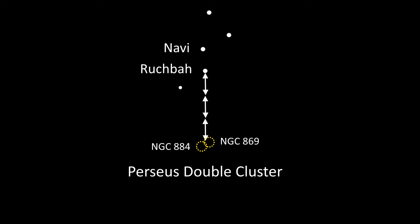To find the double cluster, we're going to start with the great signpost constellation Cassiopeia. This constellation is also very useful in finding other objects such as the Andromeda galaxy, as discussed in the video later above.